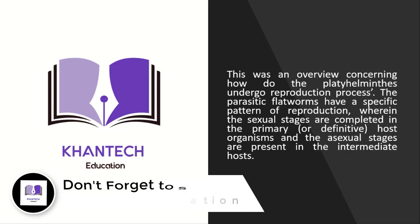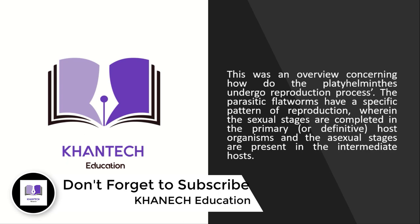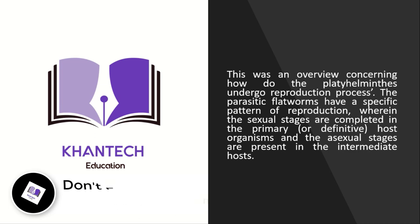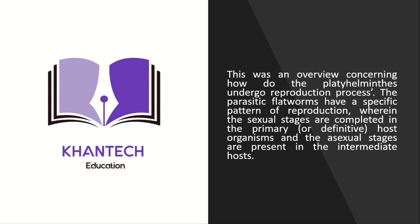This was an overview of how platyhelminthes undergo reproductive processes. For parasitic flatworms, there is a specific pattern of reproduction in which sexual stages are completed in the definitive or primary host, while asexual stages are completed in the intermediate host.